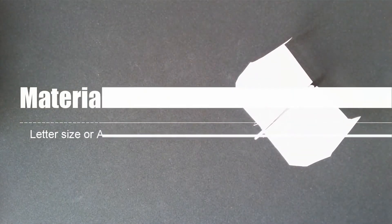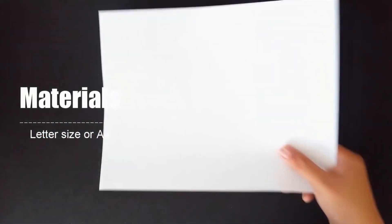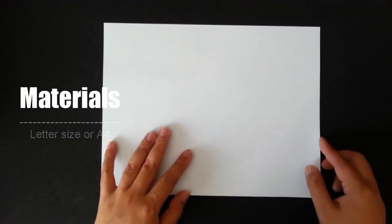To make the simplest paper airplane, you need a printing paper. You can use a US letter size, you can use A4 paper. Also, you can use just a rectangle piece of paper.